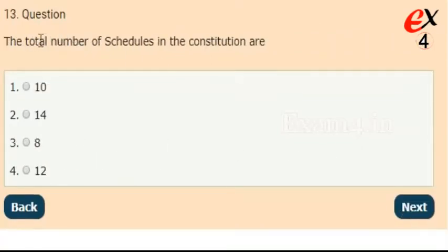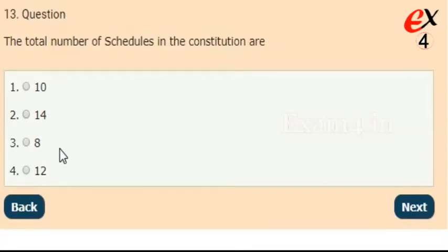The total number of schedules in the Constitution are? Options: 10, 14, 8, or 12. The right answer is option 4, 12.